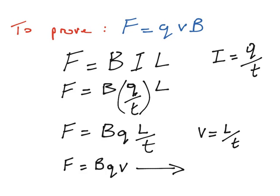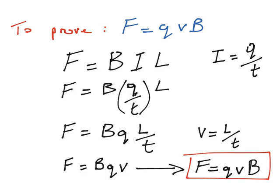And we can change that around, it doesn't matter what order we multiply things in. So our final part of this proof is that F, the force, is equal to Q, the charge, multiplied by the velocity, multiplied by the magnetic flux density. And that is the proof finished.